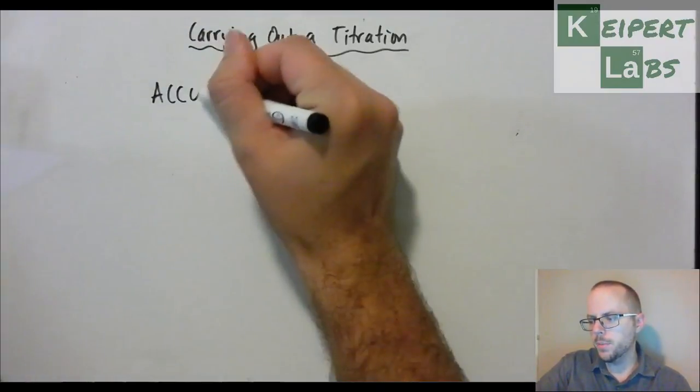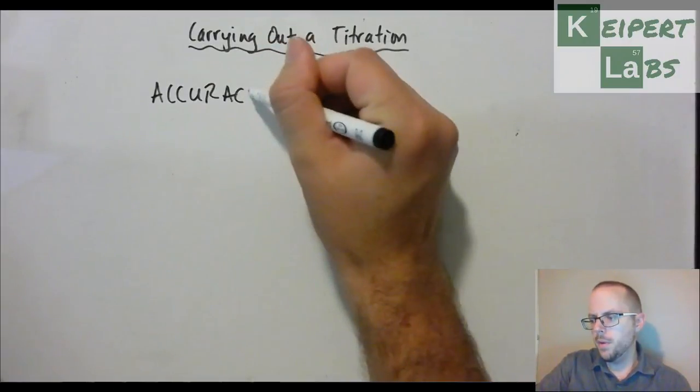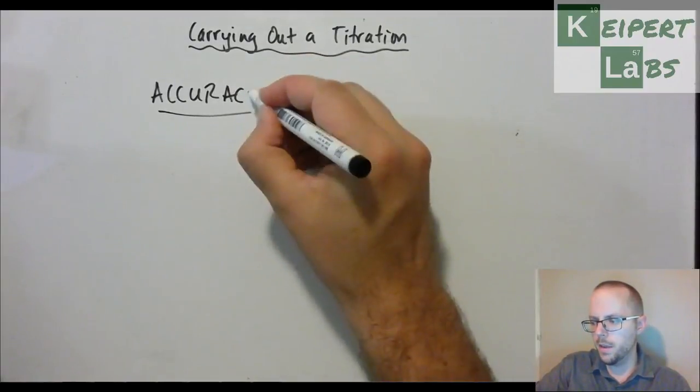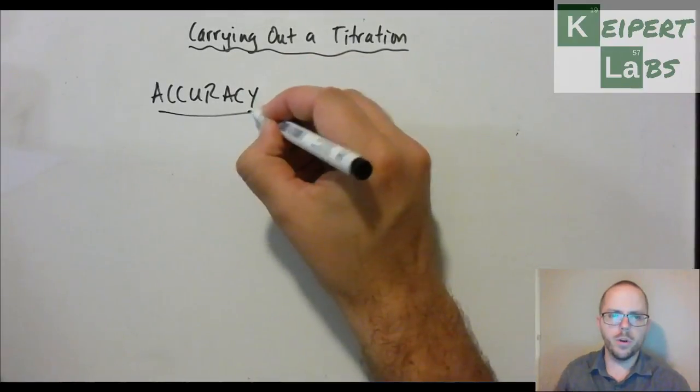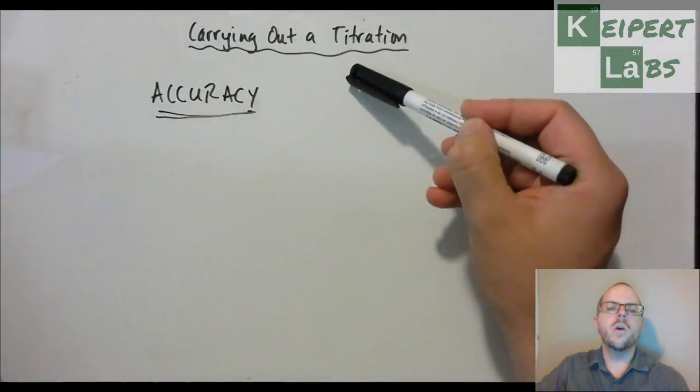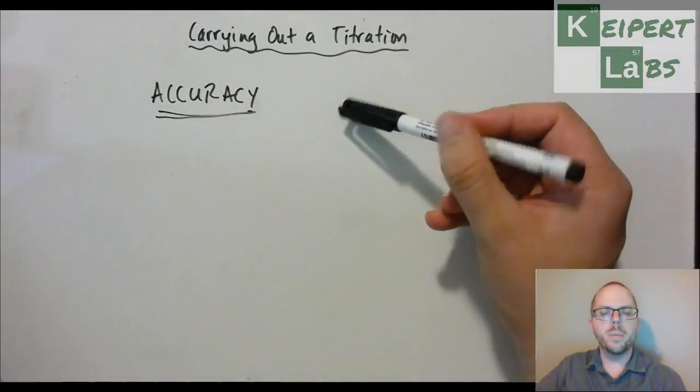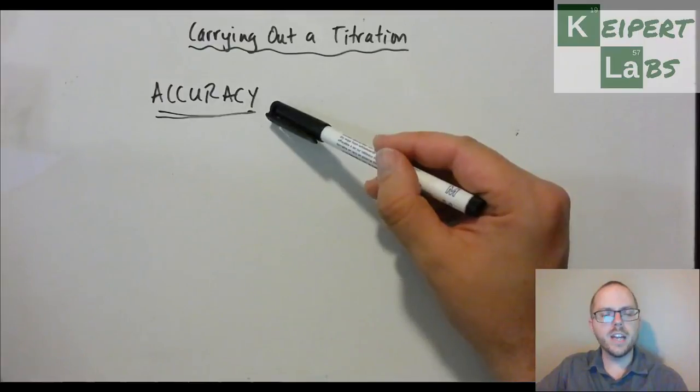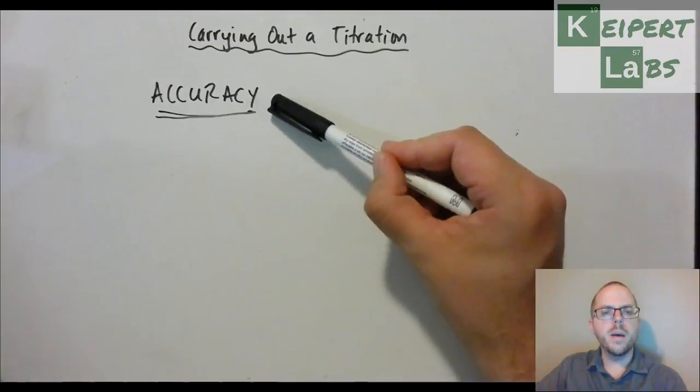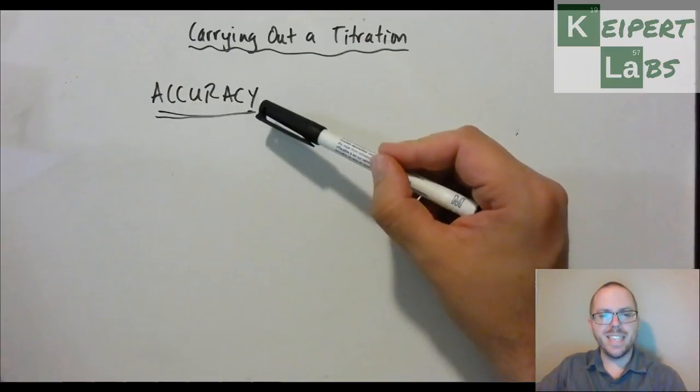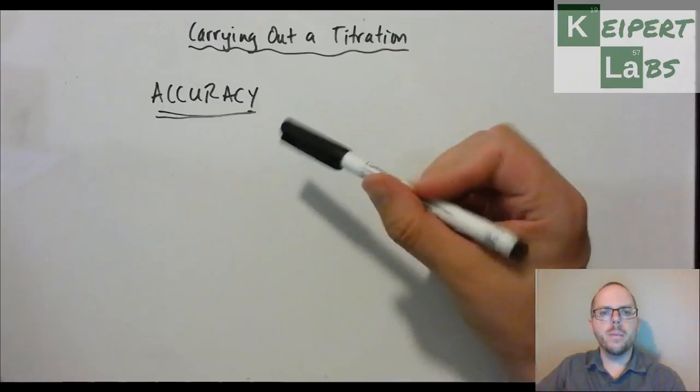But one of the overriding principles that I really want you to take out of this is that accuracy is key. Absolutely cannot get away from the fact that the whole purpose of titration, all of the principles, are building towards this concept of carrying things out accurately. Being able to determine things to a large number of significant figures because we're using a really accurate method. We're using really accurate equipment and our technique is designed around maximising accuracy.